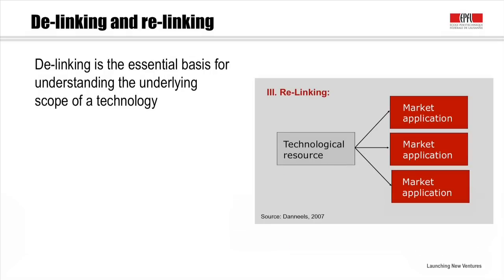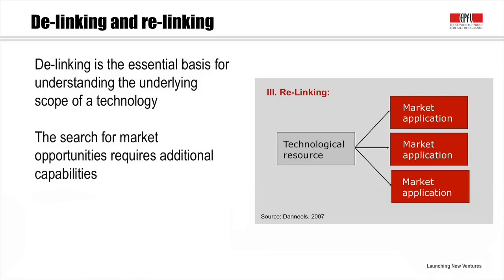The next step is to relink your technology with other possible market applications — this is the basis for understanding your application spectrum. But it also depends on whether you can see other opportunities; it's not given in advance. You have to go out there and try to understand where the technology can be applied. Think about this as a process of delinking and relinking, and then you can understand the basis of your company creation in a more systematic way.